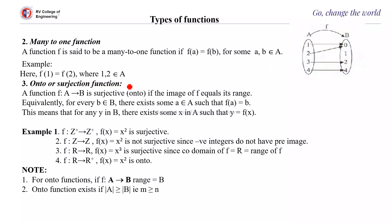Next is onto, or surjection, or surjective function. A function f from A to B is surjective or onto if the image of f equals its range. Every element in B should have at least one preimage — that is, for every b belonging to B, there exists some a belonging to A such that f(a) = b, or equivalently, for any y in B there exists some x in A such that y = f(x).